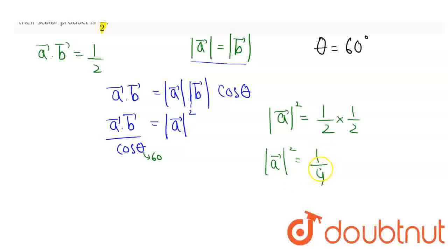Now if I take square root of right hand side, so this will be magnitude of A vector is 1 by root 2.